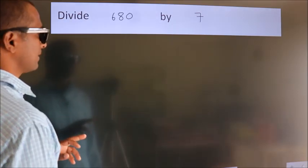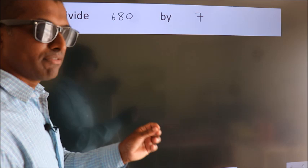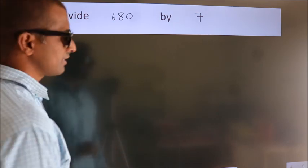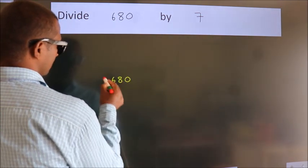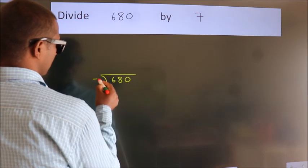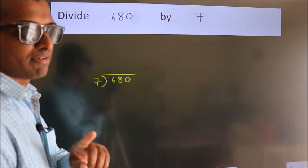Divide 680 by 7. To do this division, we should frame it in this way. 680 here, 7 here. This is your step 1.